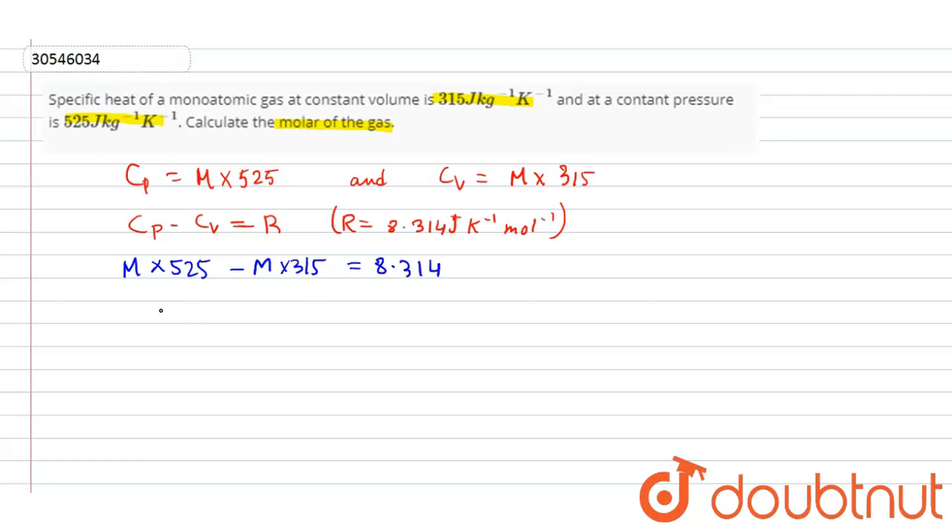Using simple maths we will get M times 210 equals 8.314, so M is equal to 8.314 upon 210.